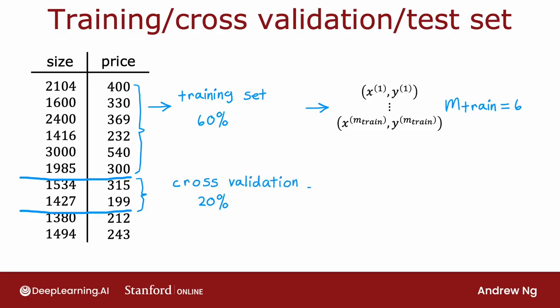We might put 20% of the data into the cross-validation set. The notation I'll use is xcv(1), ycv(1) for the first cross-validation example, all the way down to xcv(mcv) and ycv(mcv), where cv stands for cross-validation. Here, mcv equals 2 is the number of cross-validation examples.